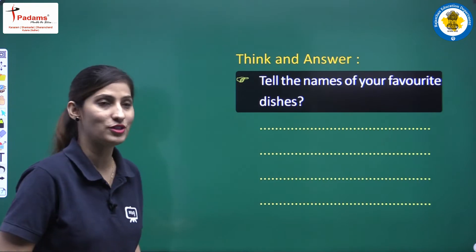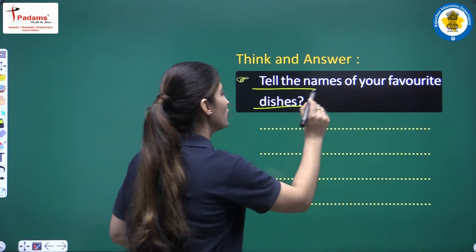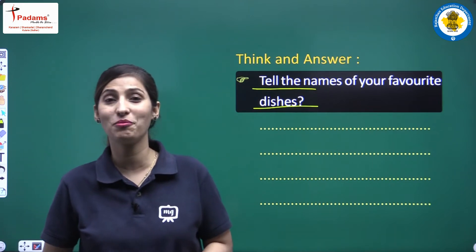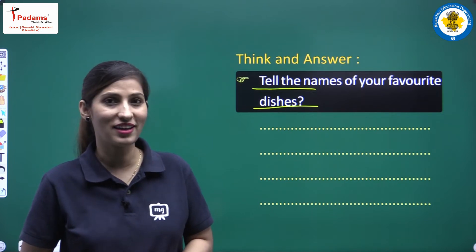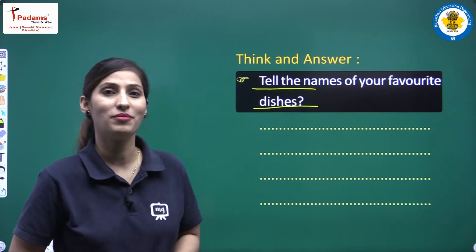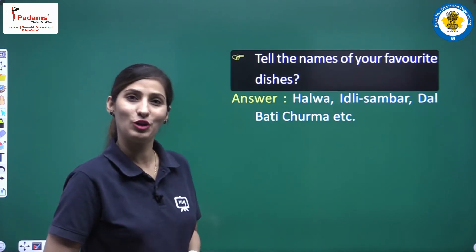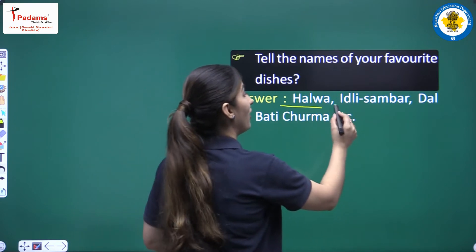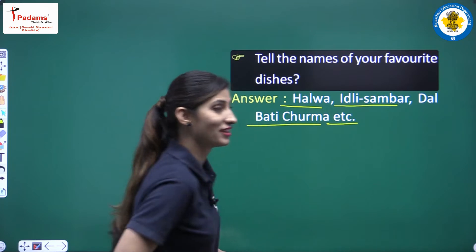Let us start. Our first question is: tell the names of your favourite dishes. I am giving you some examples — I am telling you about my favourite dishes. You can add your favourite dishes. I like halwa, idli sambar, dal bati churma, and so many things.